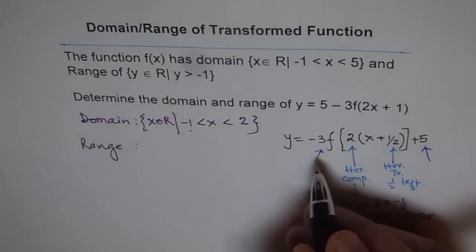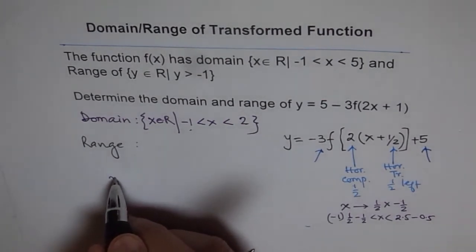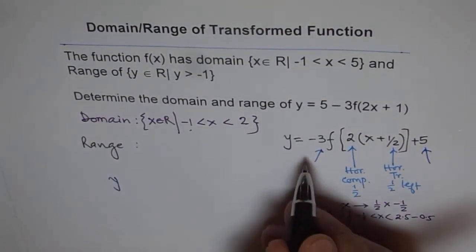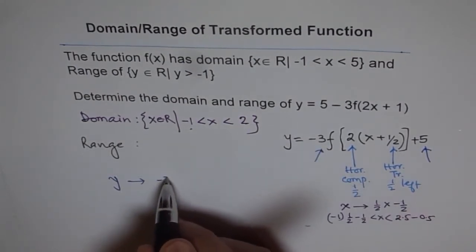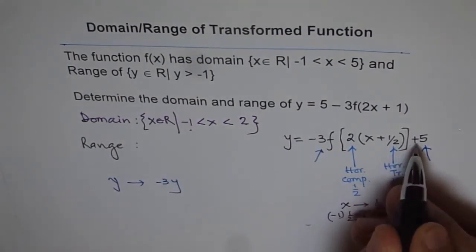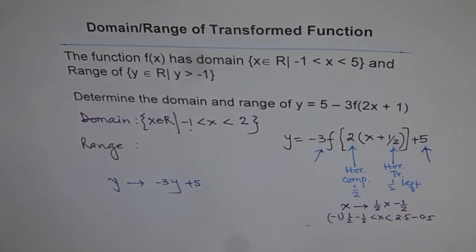Let's look into that now. In the case of range, what we notice is that the y values get transformed. They get multiplied by minus three. So I get minus three times y and then plus five. So this is the transformation which takes place for the y values. So therefore, we'll apply this transformation and write down our answer.